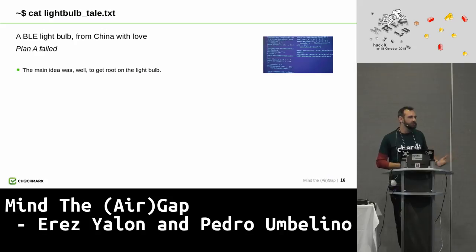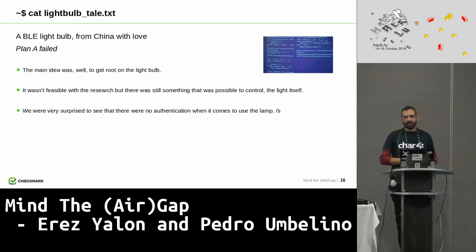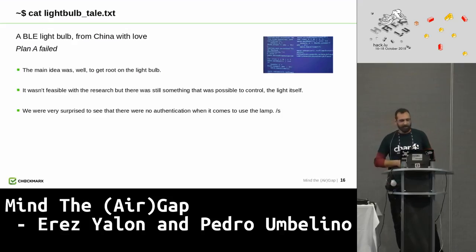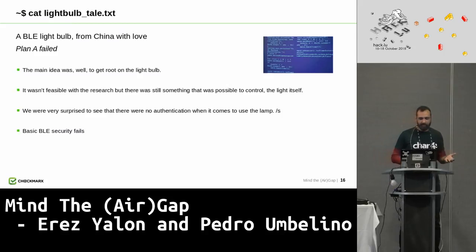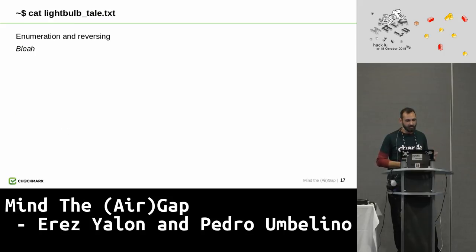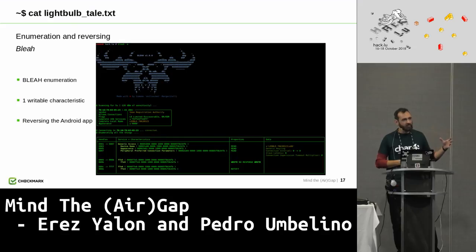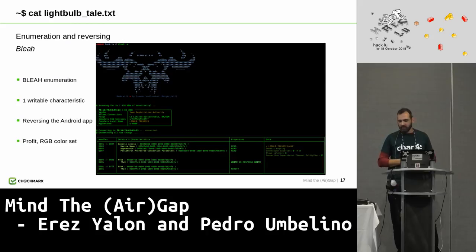Plan A is always get root, right? He was not able to get root — not enough time — but he was still able to control the light itself on the RGB light bulb. We were very surprised to find there was no authentication at all in the light bulb; everybody can control it. The process involved Bluetooth Low Energy enumeration, figuring out which characteristics could be written to, reversing the Android application to figure out the communication protocols, and which codes control which channel.